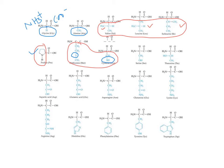Serine and threonine both have a hydroxyl group in their side chains, making them hydroxyl-containing amino acids. Tyrosine is also a hydroxyl-containing amino acid. The importance of hydroxyl-containing amino acids is that they participate in post-translational modification of protein molecules — examples include phosphorylation (the most common reversible PTM), glycosylation (addition of carbohydrate), and lipidation. Hydroxyl-containing amino acids are preferred sites for post-translational modification.